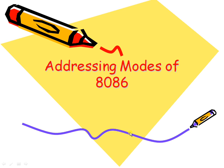In this session, we'll discuss addressing modes of the 8086 processor. Why do we go for addressing modes? The processor will get data from different sources — it can get data from a register, through an instruction, or from input-output ports or memory locations. The way of accessing those operands is nothing but addressing mode.